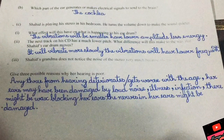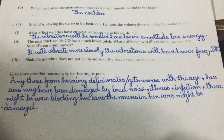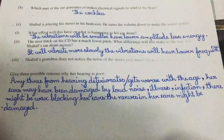Part c: Shahid is playing his stereo in his bedroom and turns the volume down to make the sound quieter. What effect will this have on his eardrum? The answer is the vibrations will be smaller, have lower amplitude, and less energy. The next track on his CD has a much lower pitch — what difference will this make to his eardrum? The answer is it will vibrate more slowly; the vibrations will have lower frequency.